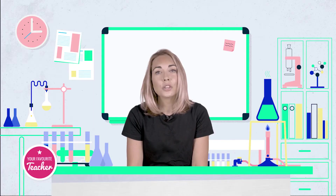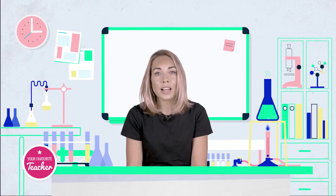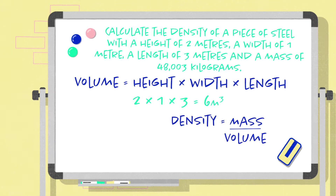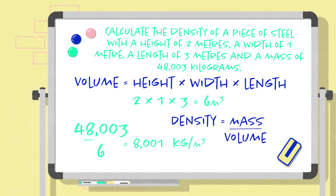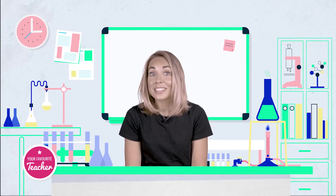Now you can substitute the values into the equation density equals mass over volume. So, 48,003 over 6, which equals 8,001 kilograms per metres cubed.